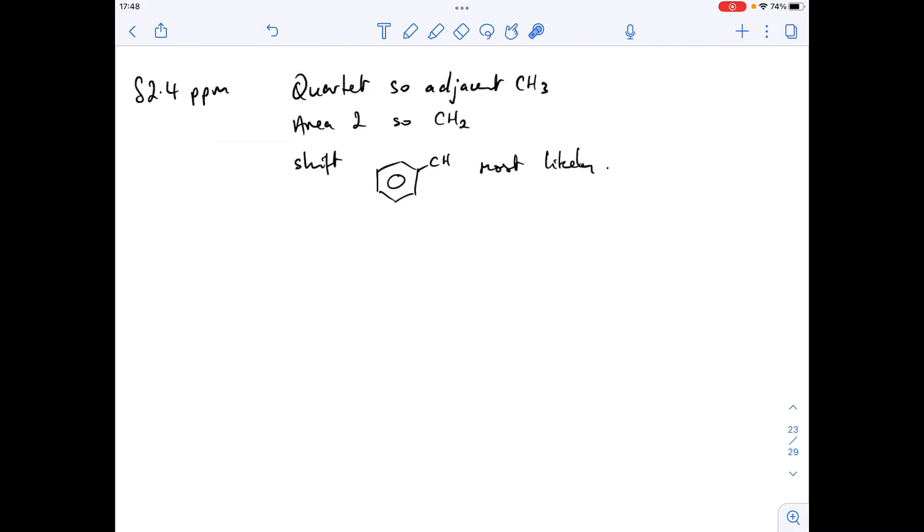So there it is written up there. Delta 2.4 ppm quartet, so adjacent CH3. Area 2, so CH2 causes the signal. The shift, the most likely, is this environment here. So from all of that information, we can now say that we've got a benzene ring, and the CH2 group bonded to it, so they've caused that signal. And bonded to it is a CH3 group. So essentially, we've established either R1 or R2.